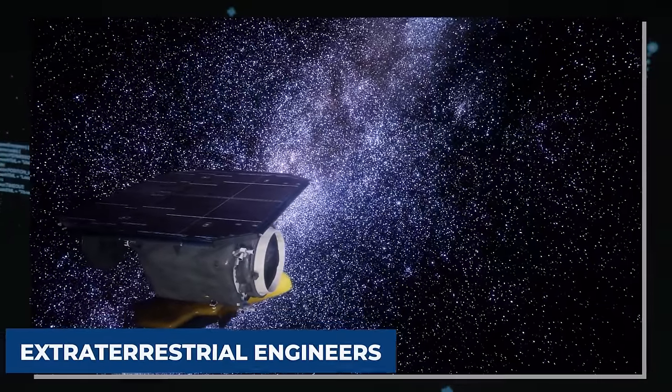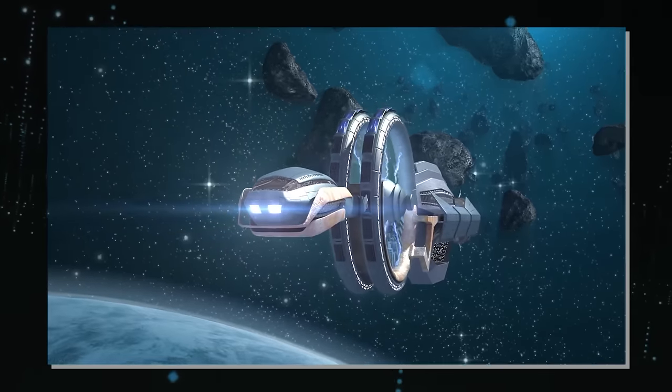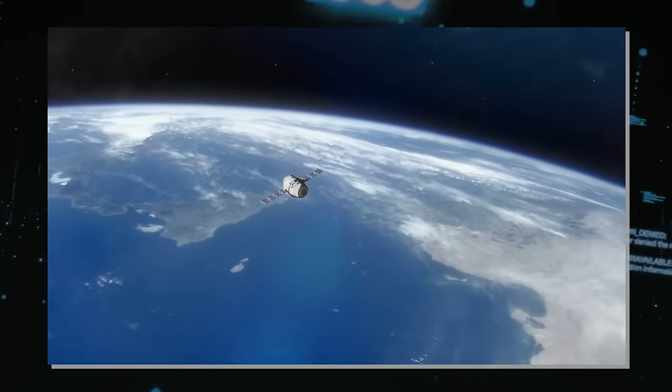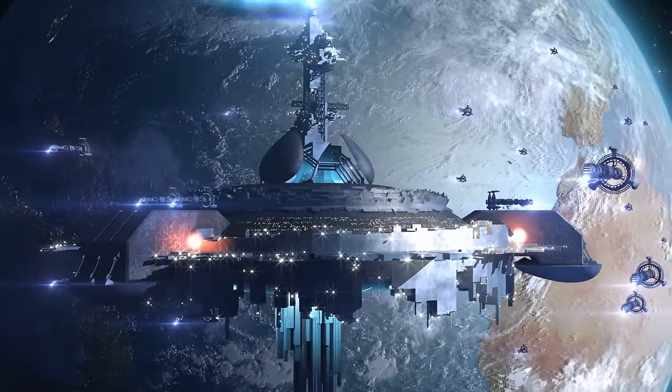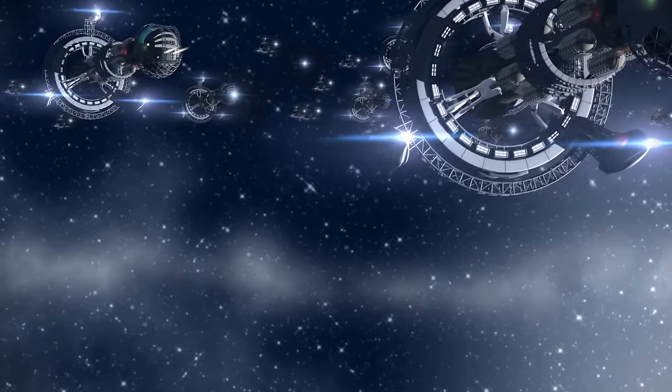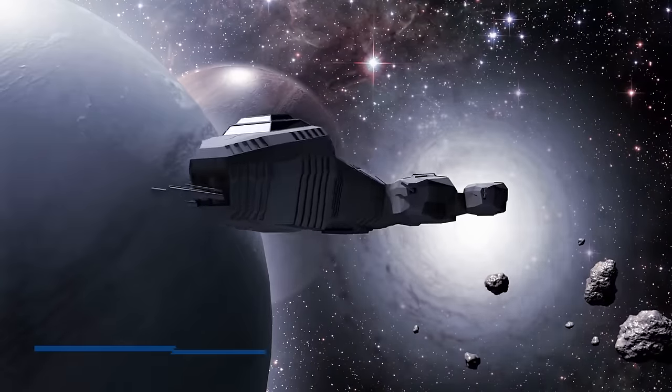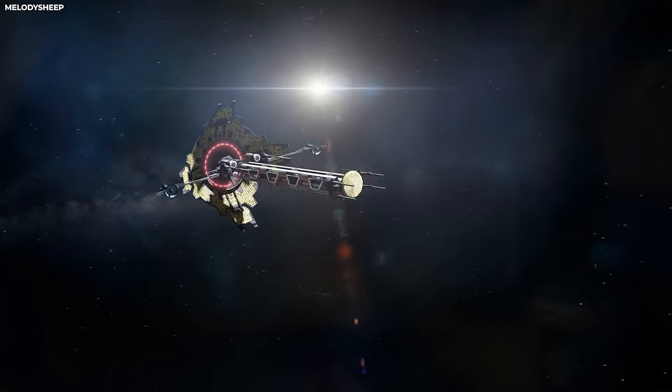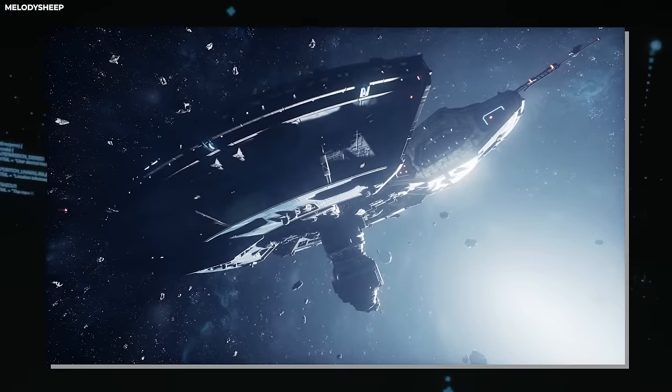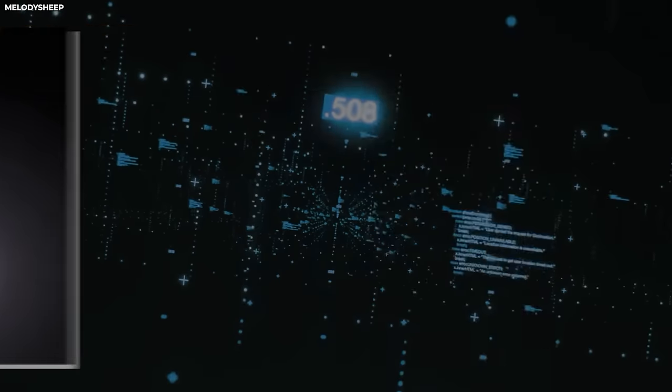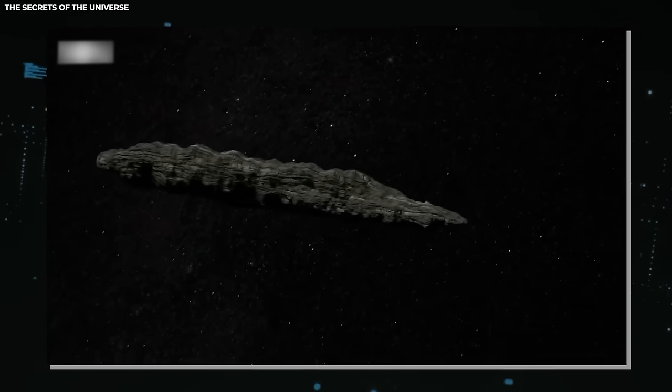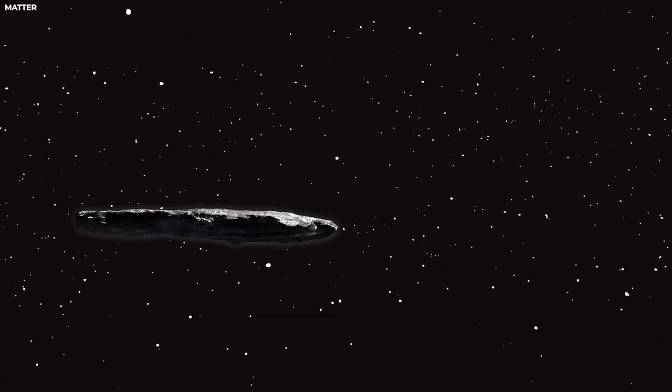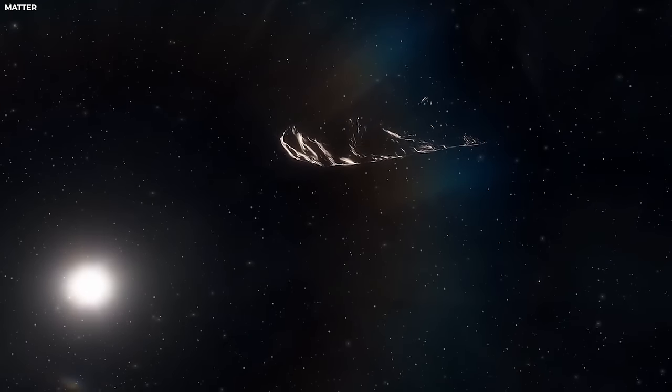Yet even if extraterrestrial engineers surmount the challenges of interstellar travel, formidable obstacles remain. Their probes must endure the harsh rigors of space, braving radiation and cosmic debris with unwavering resilience. Crafting materials capable of withstanding such extremes demands ingenuity and innovation, pushing the boundaries of material science to new frontiers. In the quest for toughness and durability, researchers strive to develop materials that defy conventional limits. Balancing hardness with resilience, these materials promise to revolutionize space exploration, paving the way for probes that withstand the rigors of cosmic voyages. Amidst these reflections on the wonders of space exploration, the enigmatic interstellar object Oumuamua emerges as a testament to the mysteries that lie beyond our grasp. Its elusive origins and peculiar trajectory captivate the scientific community, igniting debates and speculation about its true nature.